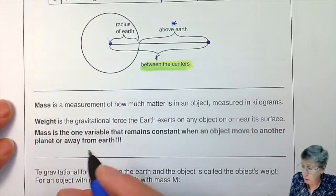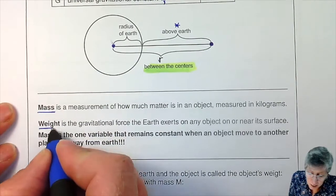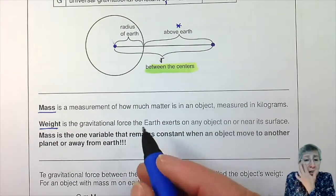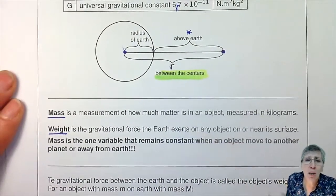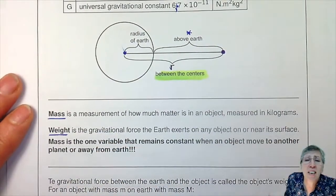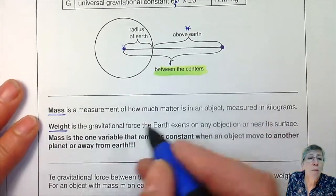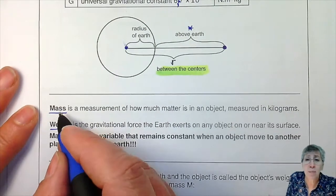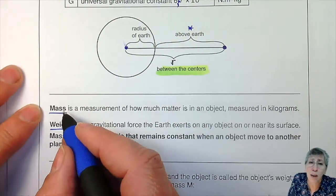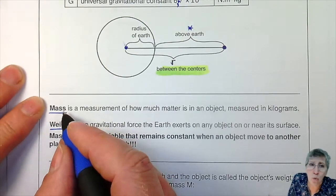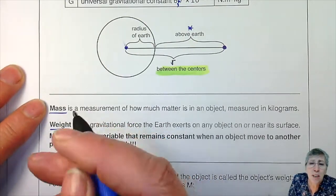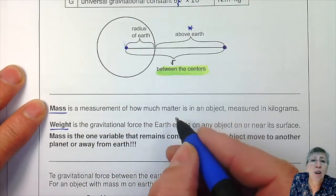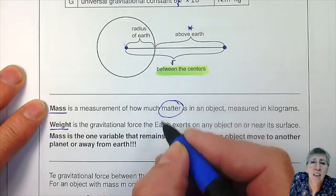You need to know the difference between mass and weight. Mass is just the measurement of how much matter an object is made of — how many molecules in your body — and that is measured in kilograms. You can change your mass only by doing something to change the number of molecules, to change the amount of matter in your body, like going on a diet, exercising, or eating more.